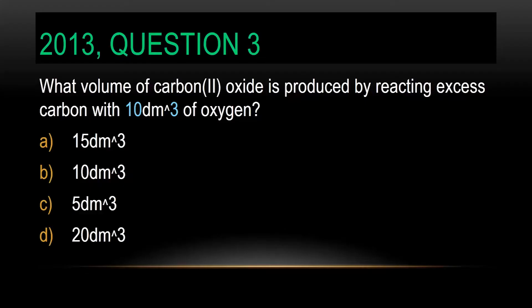Welcome back to the 3 to 1 exam. We are going to continue from where we stopped. Let's do our next question: 2013, question number three. What volume of carbon monoxide is produced by reacting excess carbon with 10 dm cubed of oxygen? Now, this is Gay-Lussac's law.